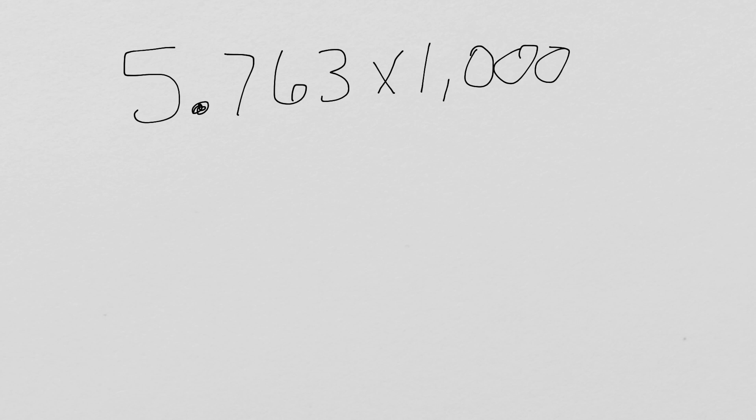Pause the video. Give it your best shot. Well, when we multiply by 1,000, we move the decimal place 1, 2, 3 spaces to the right this time.